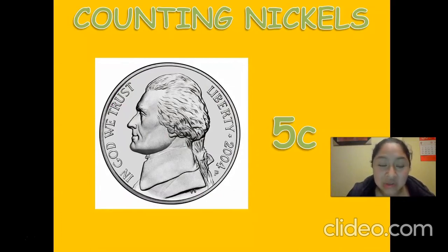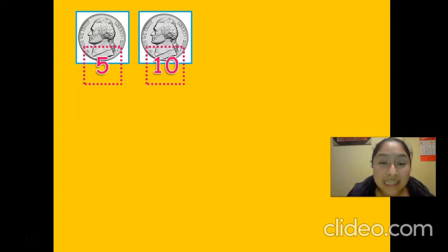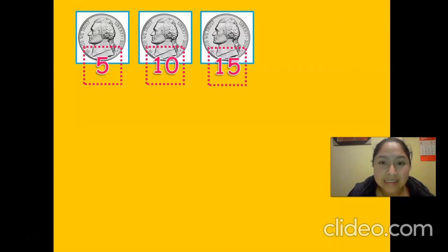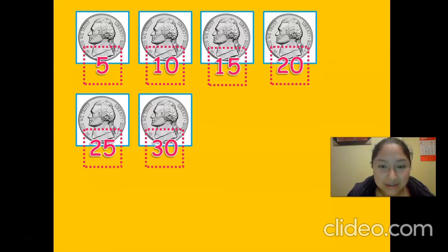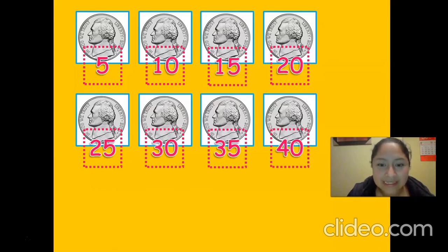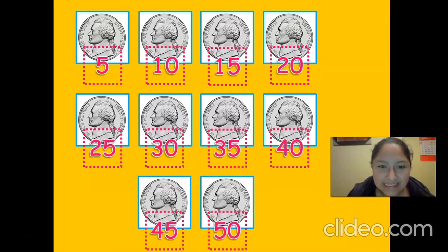Let's go with a different coin — a nickel. You know that a nickel is worth five cents. So if you have more than one nickel, you have to count by fives. One nickel is five cents. So with more than one nickel: 10, 15, 20, 25, 30, 35, 40, 45, and 50 cents. Good.